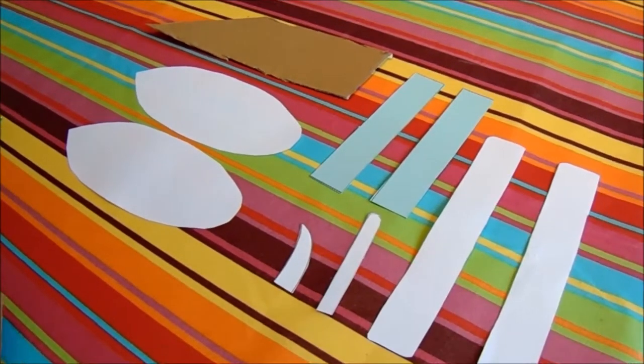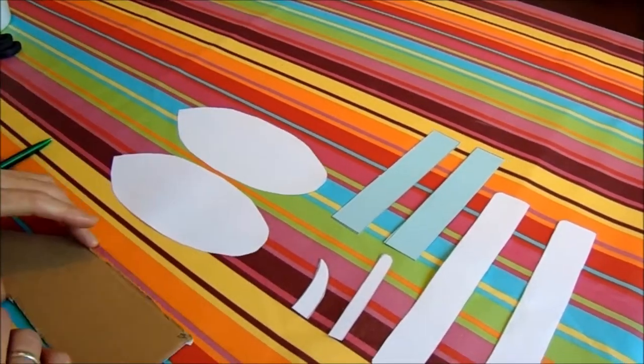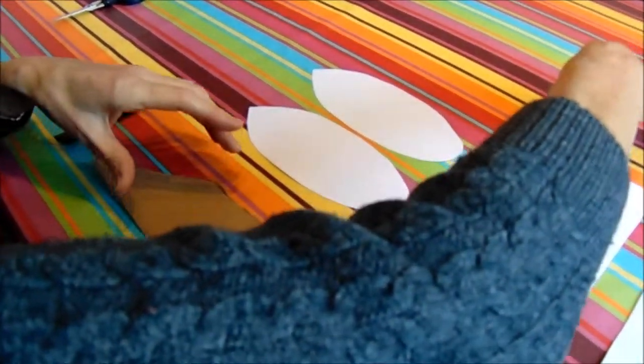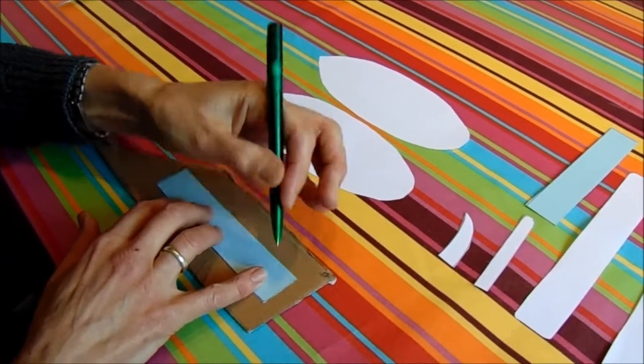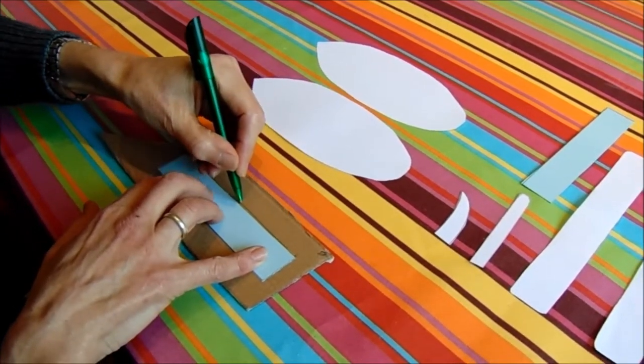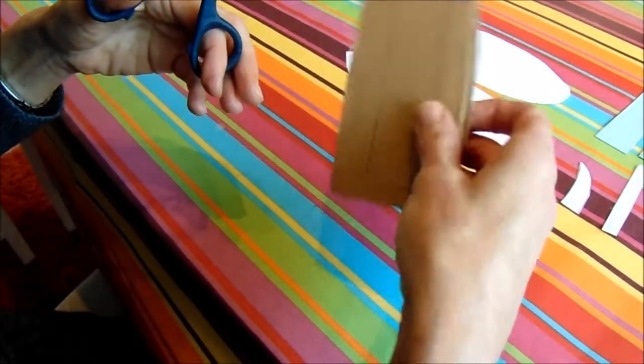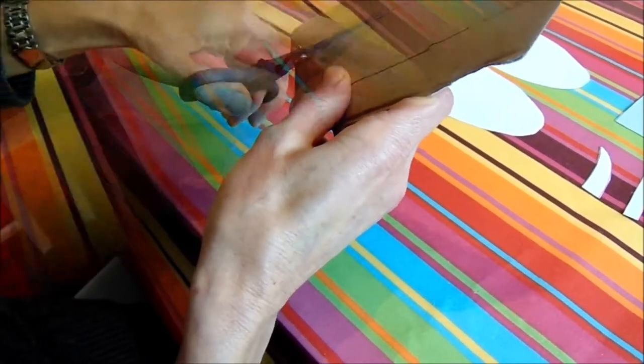Now we've cut all the shapes out, we now have to cut the support material. We've taken a piece of the carton material that we saw earlier, place the template on it and draw around that with a pen or a pencil. We then cut around that shape twice to make the two supports that we will need.